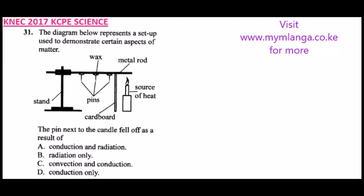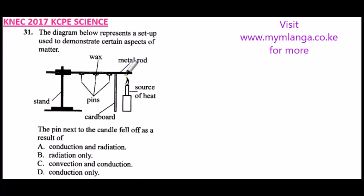Question number 31. The diagram below represents a setup used to demonstrate a certain aspect of matter. We have a metal rod, wax attached to the metal rod, a stand, and a burning candle which is a source of heat.